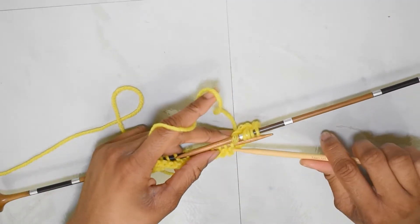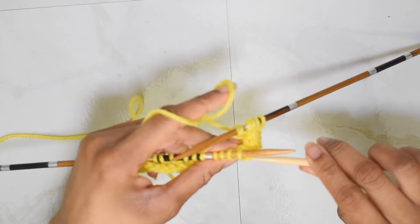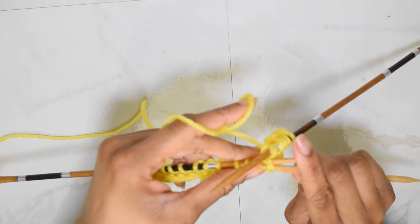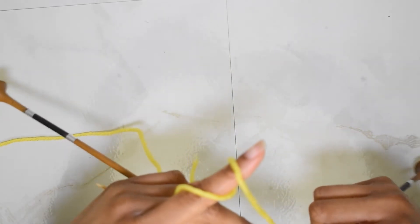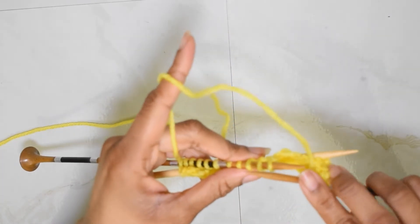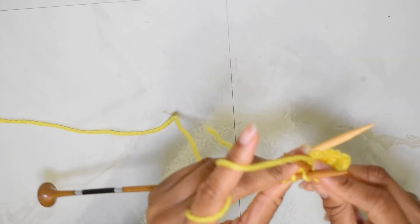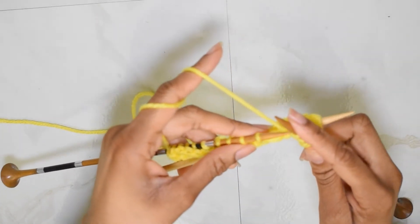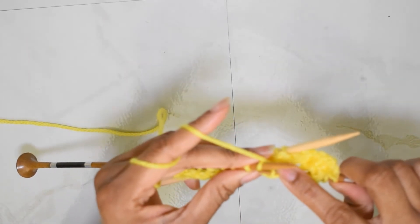Now what we're going to do is insert our cable needle purlwise into the next two stitches and we're going to slide them off. And we're going to leave these forward and we're going to knit the next two stitches on our main needle. And this can be a little fiddly honestly. Knit one. Knit two.